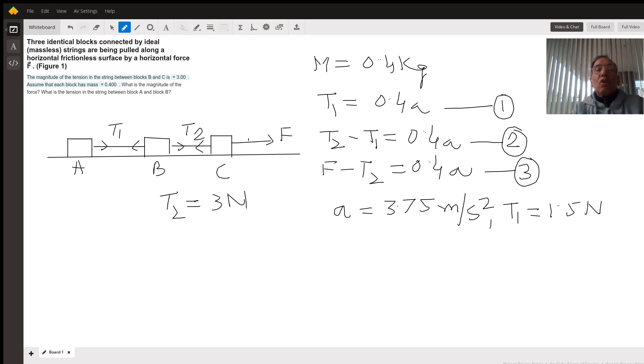Solving these three equations with T2 equals 3, we get the acceleration of the system as 3.75 meters per second squared.